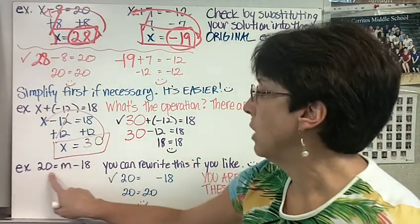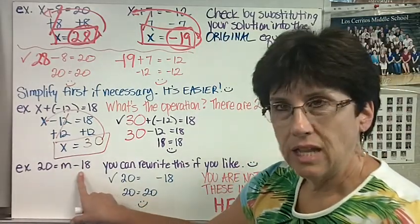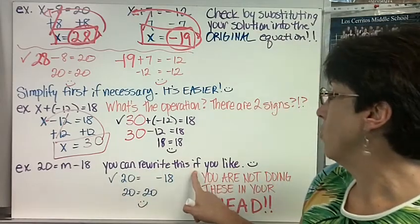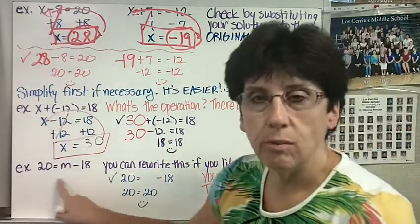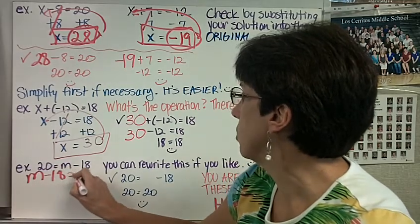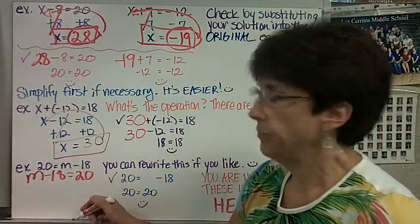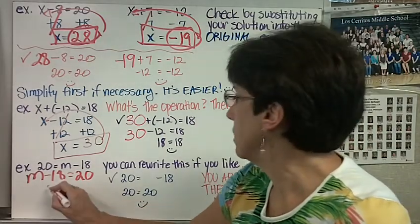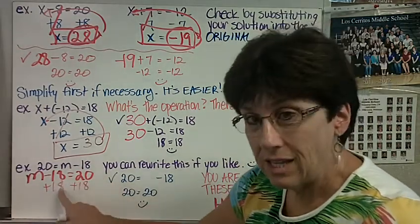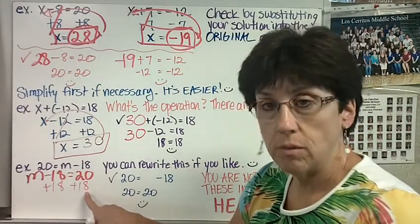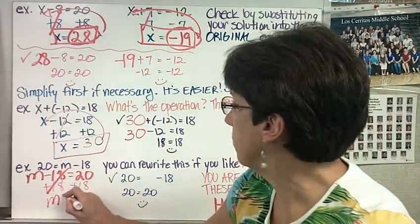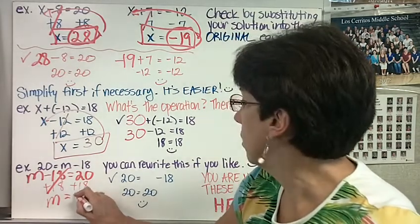One more problem. 20 equals m minus 18. That's not the way the other ones looked. If you don't like the way it looks with the answer on the left and then the problem, you can rewrite it if you like. I like to rewrite it sometimes. So I'll say m minus 18 equals 20. Now that's the way I like it. Opposite operation of subtraction, addition. Add 18 to both sides of my problem, both sides of my equal sign. Notice how I line the 18 up and I line the 18 up underneath my 20. So negative 18 and positive 18, they cancel each other out. All I have left is the m equals 20 plus 18, 38. I remembered to box my answer.